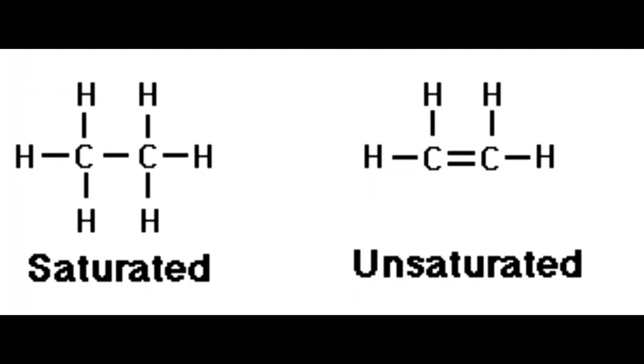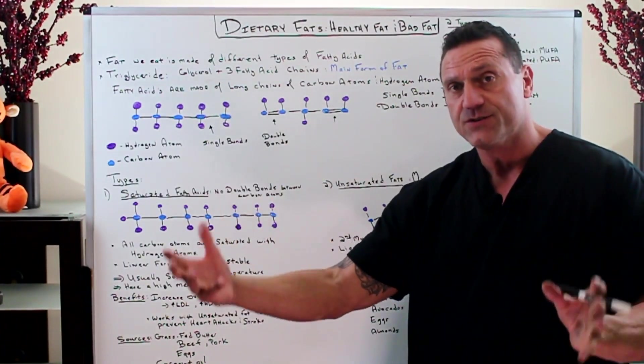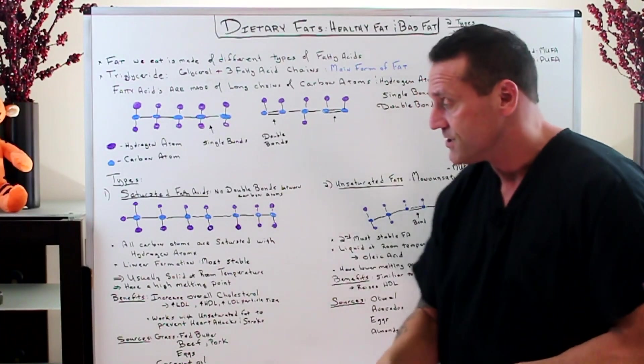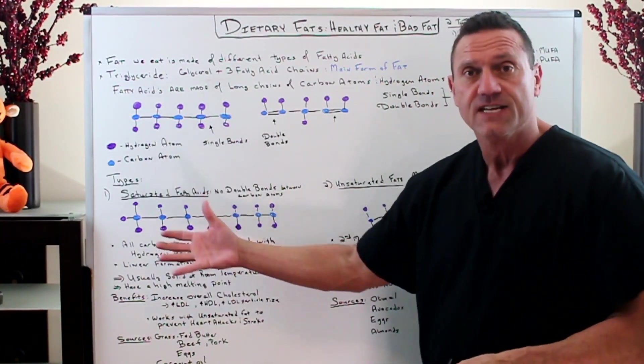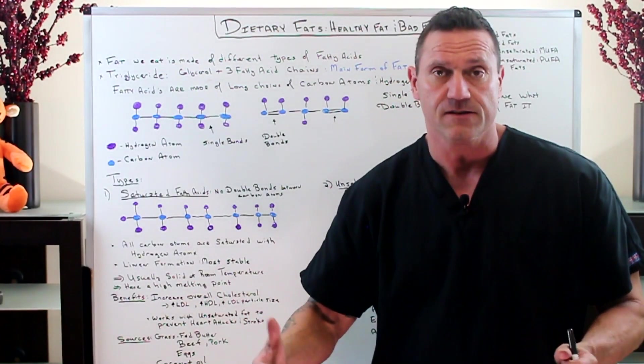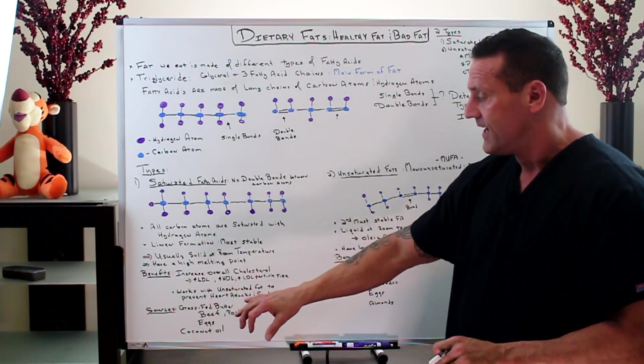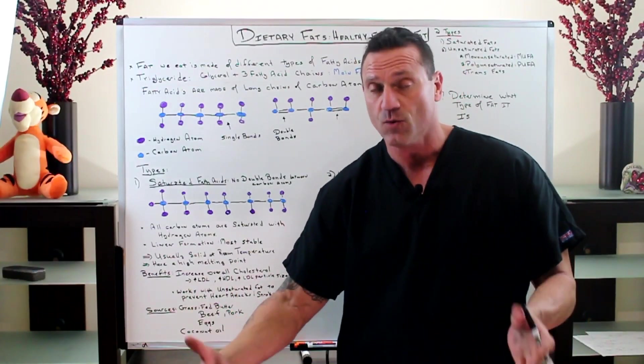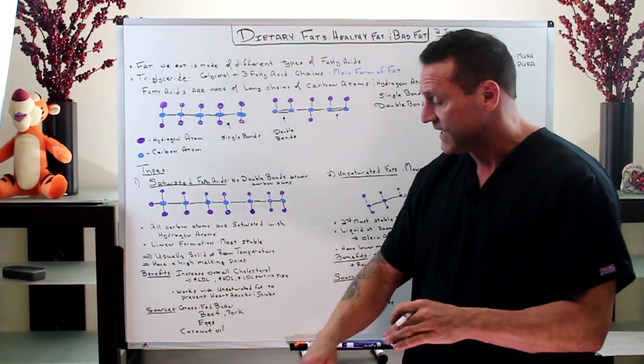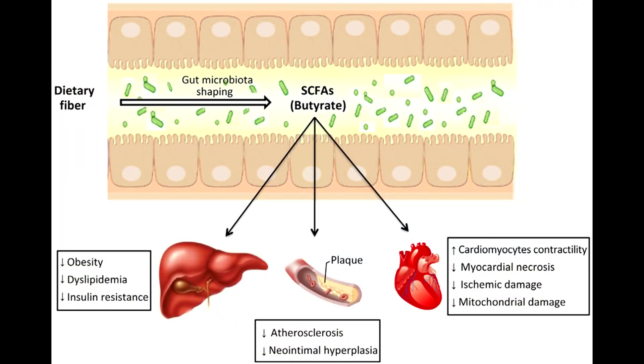Now saturated fatty acids have no double bonds between the carbon atoms. All carbon atoms are saturated with hydrogen atoms. It's usually a linear formation, very stable, usually solid at room temperature. They have a high melting point and the benefits increase overall cholesterol levels - your LDL, your HDL, the particle size. Remember, cholesterol, we need it. It is good for us, but do everything in moderation. The best source is always organic grass-fed butter, grass-fed beef, grass-fed pork, eggs, coconut oil. It's loaded with short-chain fatty acids, which are good for the gut.